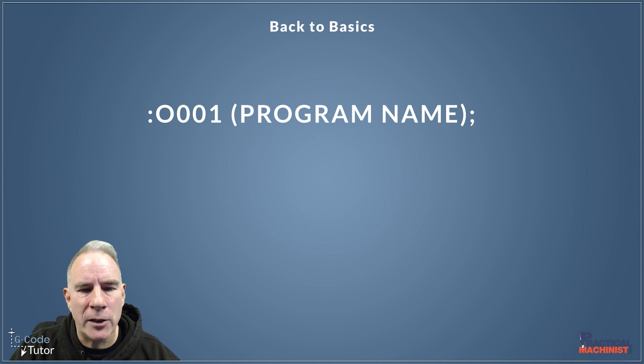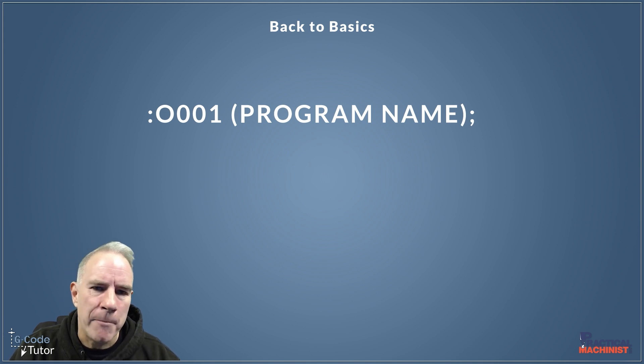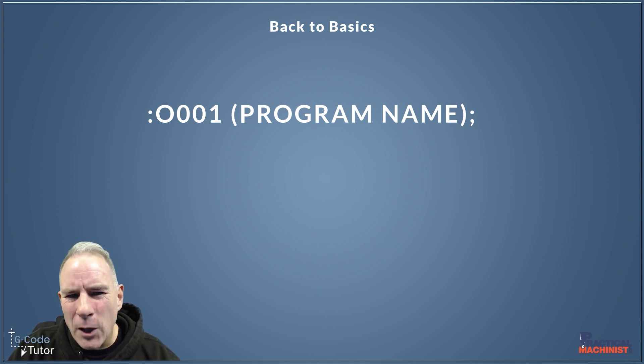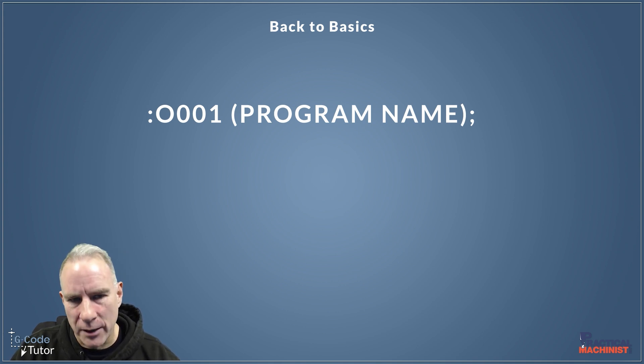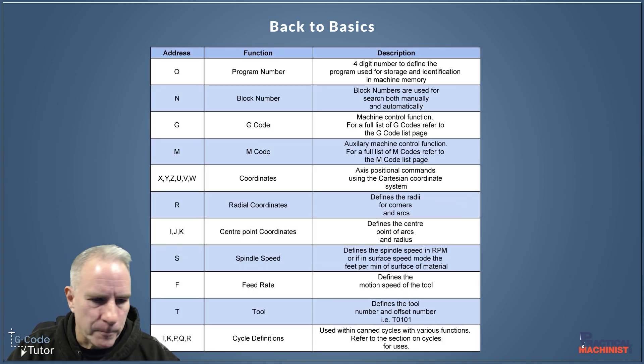Let's start off by looking at our program number. The program number can often be confused with a zero, but it actually starts with a letter O followed by two zeros and a one here.